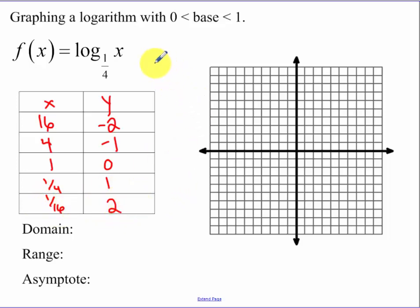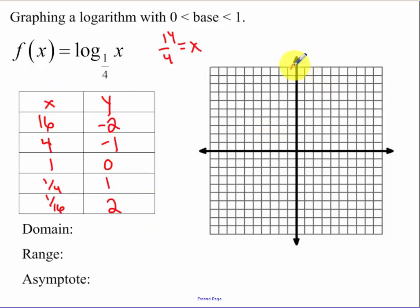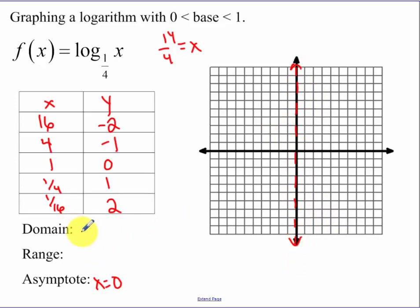If you're more comfortable, convert this to an exponential: 1 fourth to the y equals x, and then pick y values that are going to get you your x values. This doesn't have any translations left and right — we haven't talked about those yet. So your asymptote is still the y-axis, or the line x equals 0. Think of that asymptote like a wall that we can never cross. X is greater than 0.